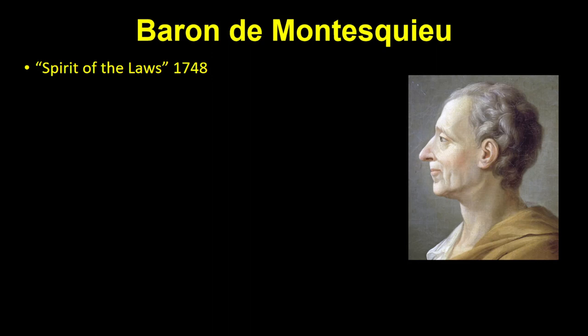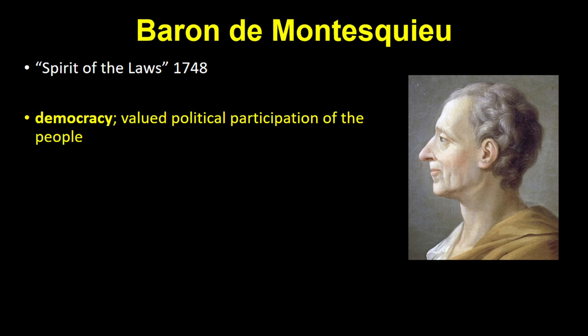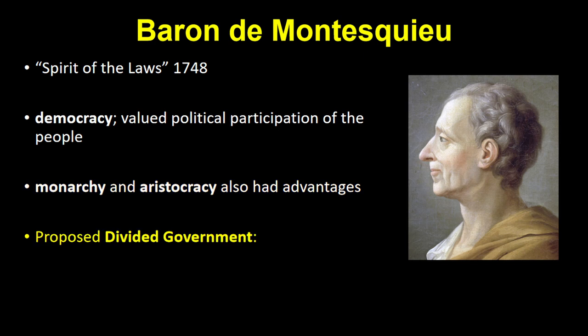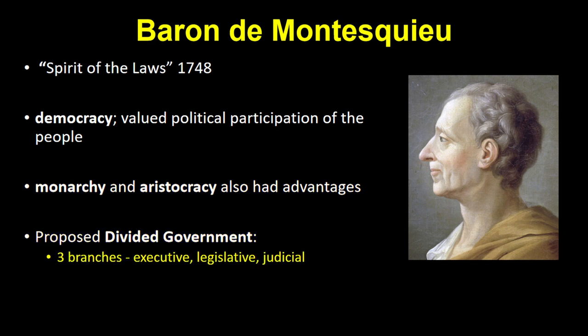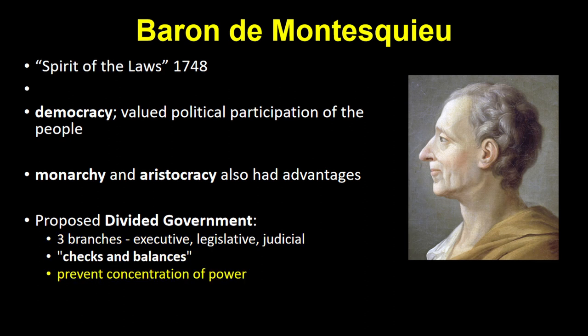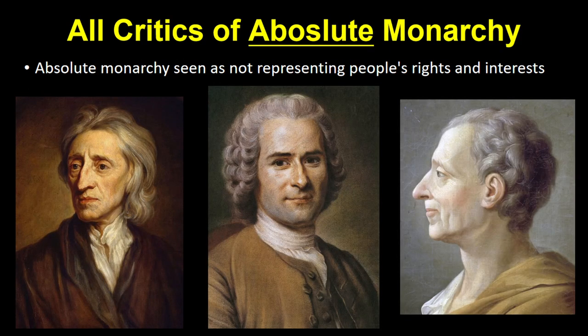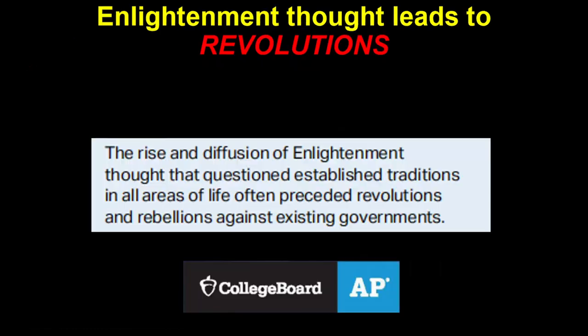A third thinker you should know is Montesquieu. He used the word democracy in The Spirit of the Laws, and believed involvement of the people was important. But he also thought monarchy and aristocracy had advantages, so he advocated a system of divided government with an executive, legislative, and judicial branch. These three branches would provide checks and balances to ensure none would have too much power and threaten individual rights. Locke, Rousseau, and Montesquieu were all critical of absolute monarchy because it didn't protect the rights or interests of the people.